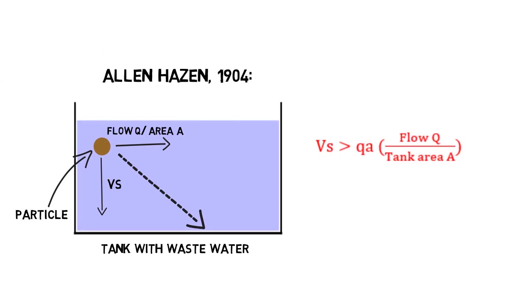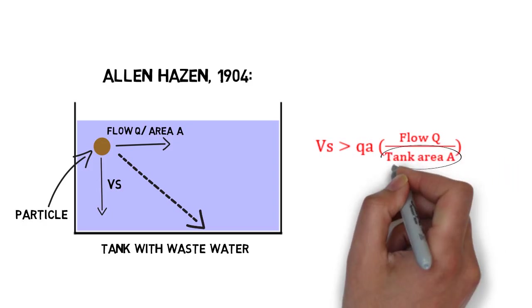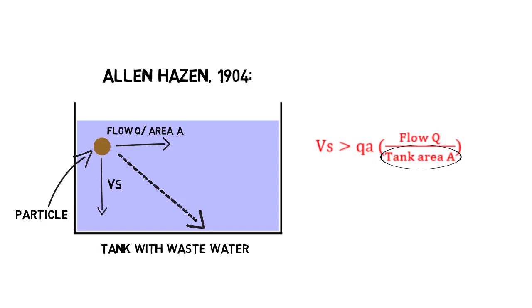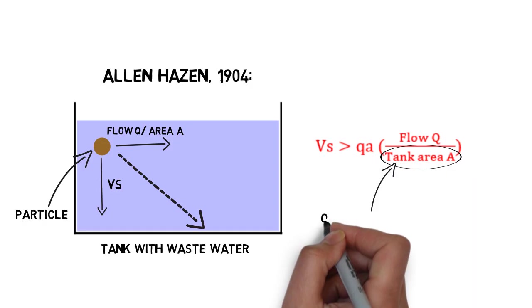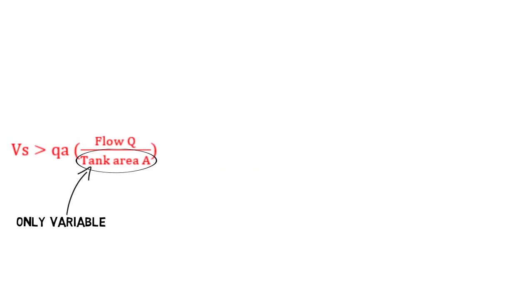Except with flocculation, the sedimentation velocity, Vs, of particles and flow Q cannot be changed. By increasing the only variable, tank area, we decrease the surface loading, QA, and therefore increase the settling performance.